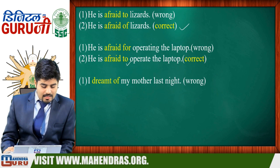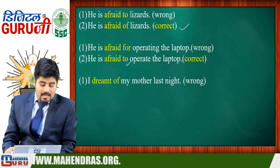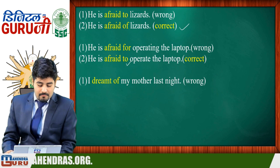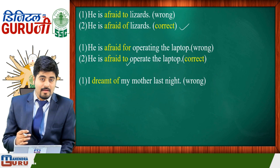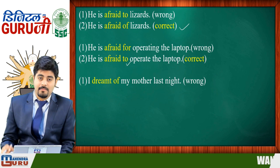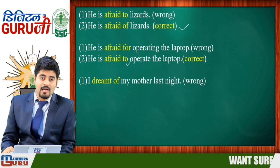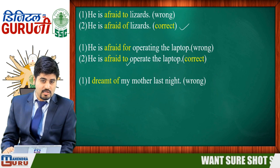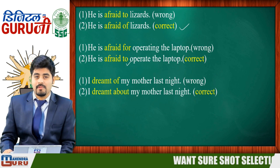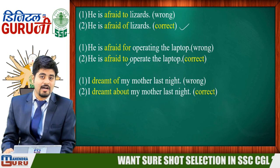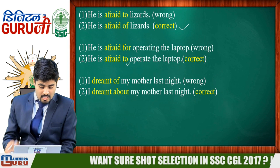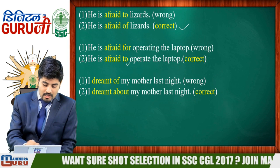Another example: 'I dreamed about my mother' — when you dream about a person, the preposition used with 'dream' is 'about.' So 'dream about' is the correct collocation. These preposition combinations with specific words must be learned through practice and memorization.